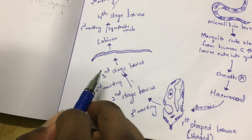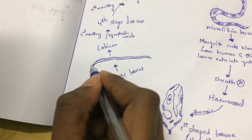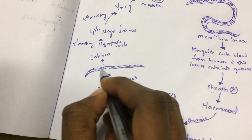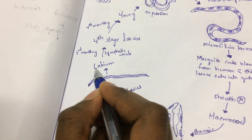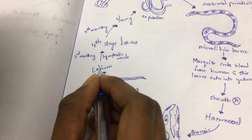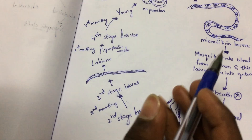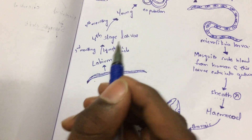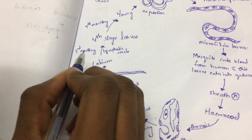The third stage larva will be slender and long — very long compared to the Microfilaria larva. This larva will enter into the labium. The meaning of labium can be learned in the mouth parts of the mosquito. Again, the mosquito which has been infected with the Microfilaria larva will suck blood and will bite a fresh candidate — a fresh human host.